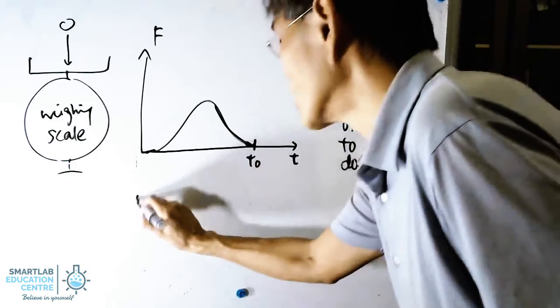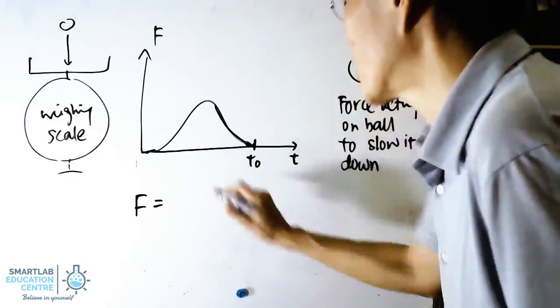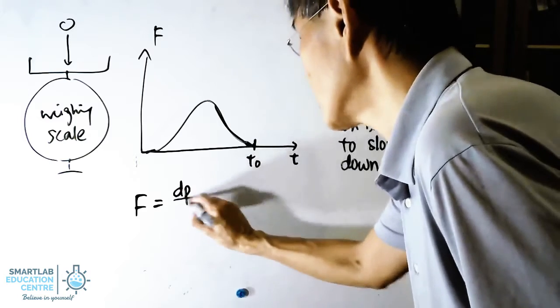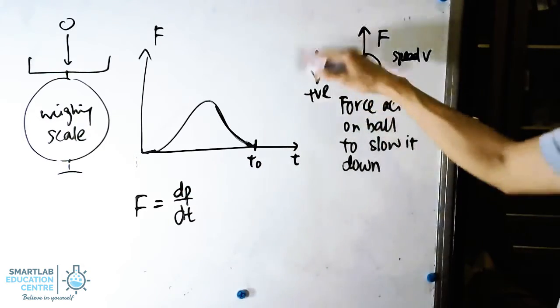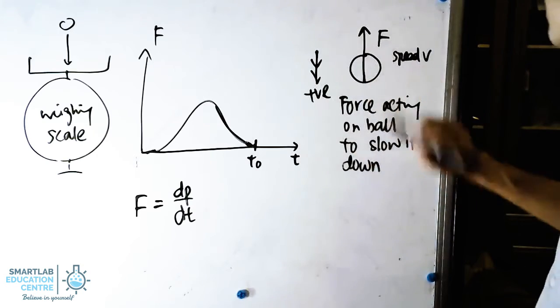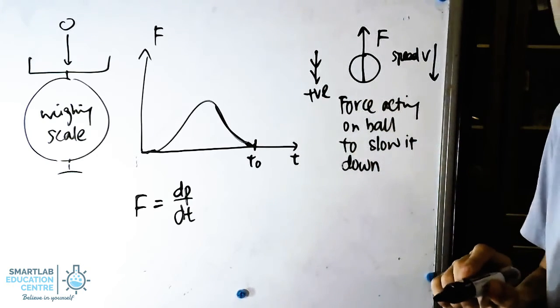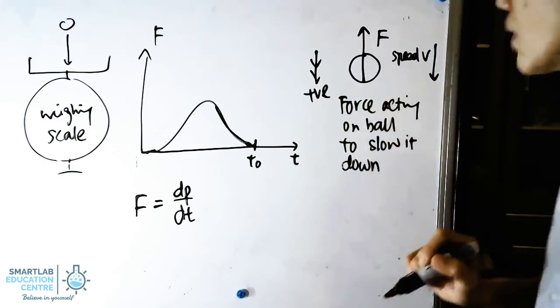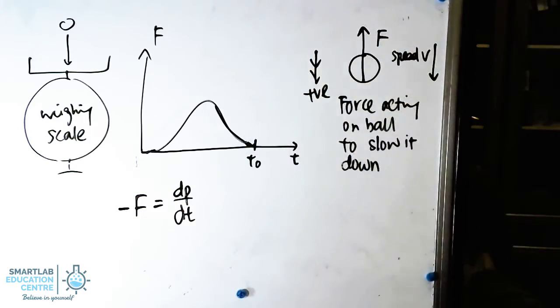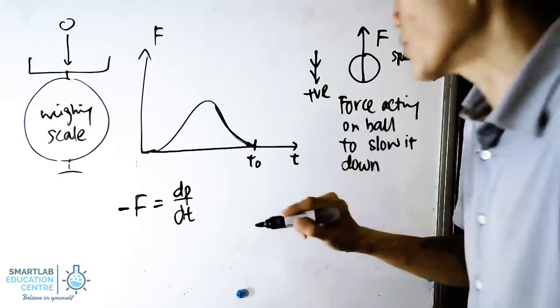So as far as the force is concerned, force acting on the object is defined as the rate of change of momentum. So that's dp dt. So we're taking the convention as downward is positive. So the force acting on the object is downward. The speed is moving downward as well. So bear in mind that the force acting on the ball will be negative F equal to dp dt.